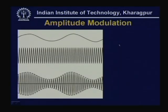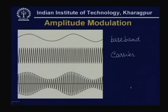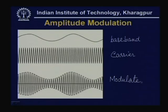Here we see an example: a baseband signal of low frequency (a sinusoidal signal) is the modulating signal, and here is the carrier. The amplitude of the carrier has been modified with the help of this baseband signal. Where the baseband signal has maximum amplitude, the carrier has maximum amplitude; where it is minimum, the carrier has minimum amplitude. We get a carrier frequency with time-varying amplitude — this is known as the modulated signal.